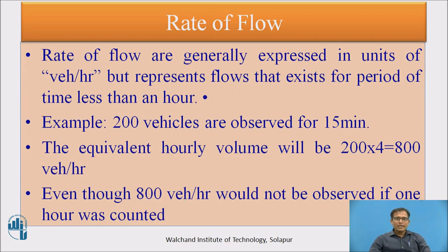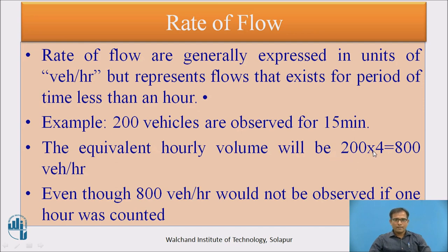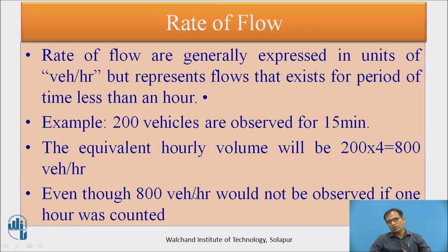Rate of flow is generally expressed in units of vehicles per hour, but it represents the flow that exists for a period of time less than one hour. For example, if 200 vehicles are measured in a 15-minute period, the rate of flow per hour is 200 × 4 = 800 vehicles per hour, since there are four 15-minute periods in an hour. This means 800 vehicles would not necessarily be observed if a full hour were counted.